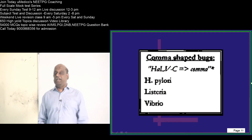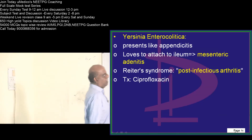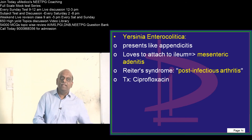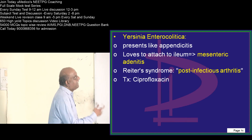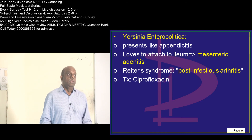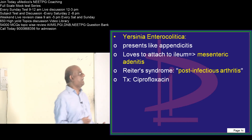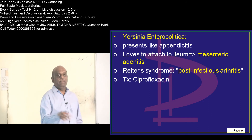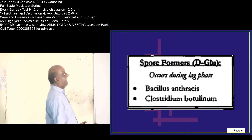What are those comma-shaped organisms? H. pylori, Listeria, Vibrio — these three are called the comma-shaped organisms. A few comments on Yersinia enterocolitica: if the clinical picture is like appendicitis — abdominal pain, right-sided — but it is not appendicitis, you should think of Yersinia. Yersinia infects the mesenteric lymph nodes and the pain is similar to appendicitis. Yersinia is also implicated in Reiter's syndrome, a post-infectious arthritis. Drug of choice is ciprofloxacin.